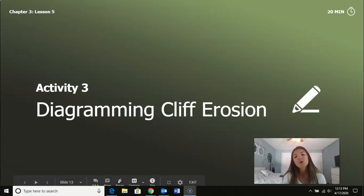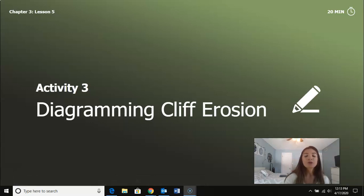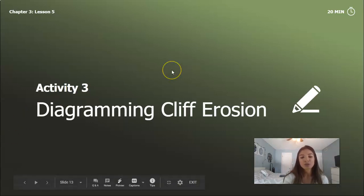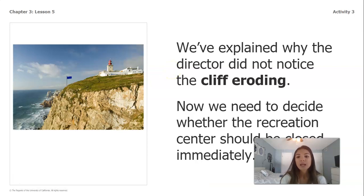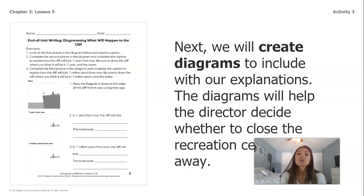Hi second graders! We are back for our last part of lesson five and we are going to be diagramming cliff erosion. We've explained why the director did not notice the cliff eroding. Now we need to decide whether the recreation center should be closed immediately. Next we will create diagrams to include with our explanations. The diagrams will help the director decide whether to close the recreation center right away.